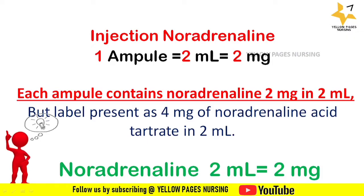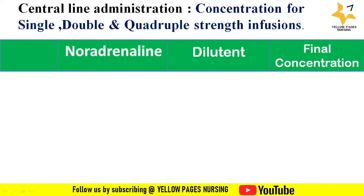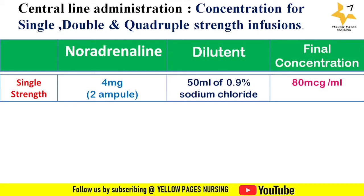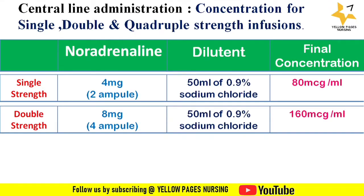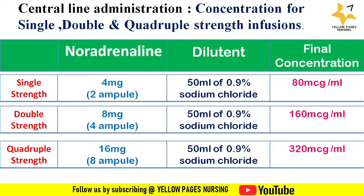Now let's look at the concentrations for single, double, and quadruple strength infusions for central line administration. For single strength: 2 ampoules (4 mg) diluted in 50 ml sodium chloride — final concentration 80 mcg/ml. For double strength: 4 ampoules (8 mg) diluted in 50 ml — final concentration 160 mcg/ml. For quadruple strength: 8 ampoules (16 mg) diluted in 50 ml — final concentration 320 mcg/ml.